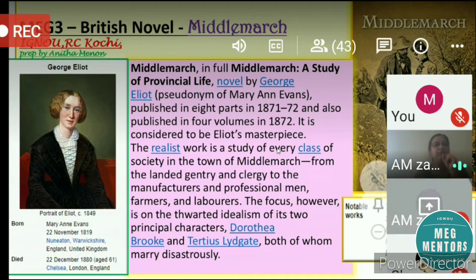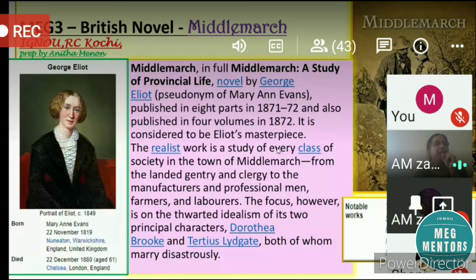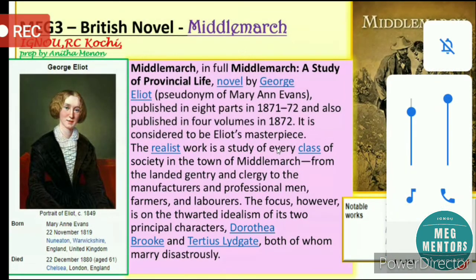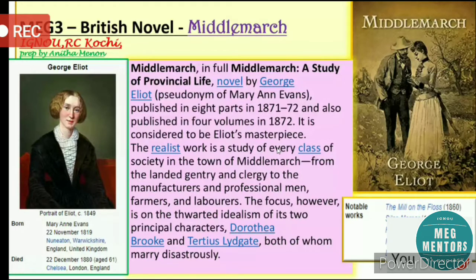The book was so big that the publisher felt the best way to publish would be to divide it into three parts. Once the book started becoming a huge roaring success and all the parts were published separately, he brought out in 1872 another set in four volumes, and it is considered to be Eliot's masterpiece.